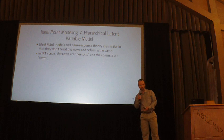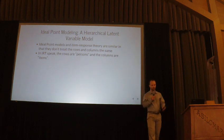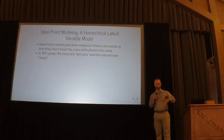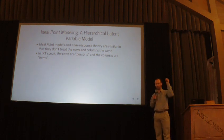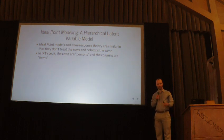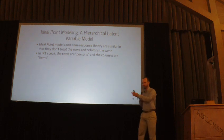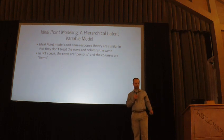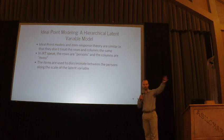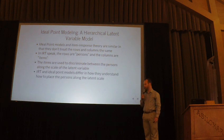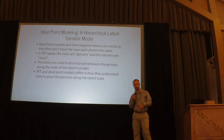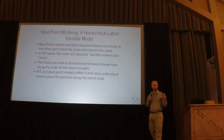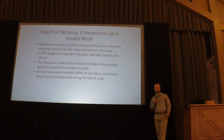In item response theory language, which I'm going to use for this talk, the columns are items and the rows are people. This comes out of the original application to educational testing. You have people answering items or questions on a test, and the latent variable is ability — how good a test taker you are. If you do better on the observed indicators, you're a better test taker. The items are used to discriminate between different people along the latent scale.